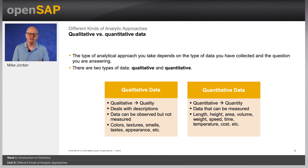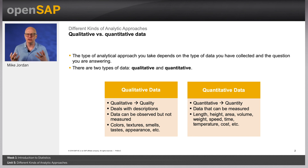Qualitative data consists of words or narratives. The analysis of this type of data includes highlighting keywords and the identification of themes. For example, data captured from a focus group to understand the participants' perceptions. The data could be in free form, so it's a narrative, and you use qualitative techniques to identify content and identify themes.